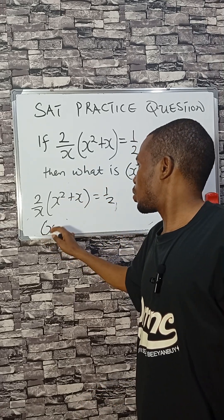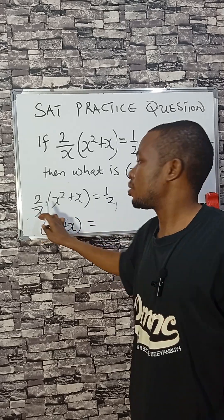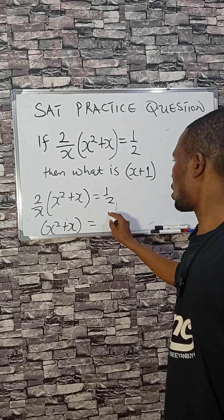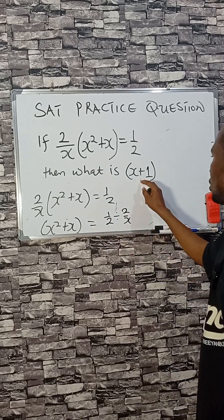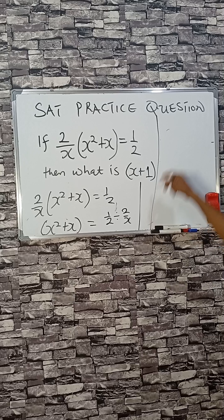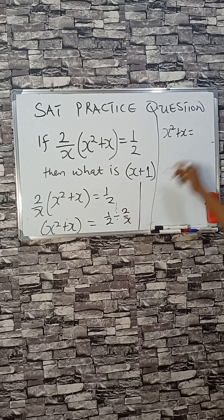I can make x squared plus x the subject. By dividing both sides, you'll have one over two divided by two over x. And that will be, you have to check, that will be x squared plus x equals to a half.